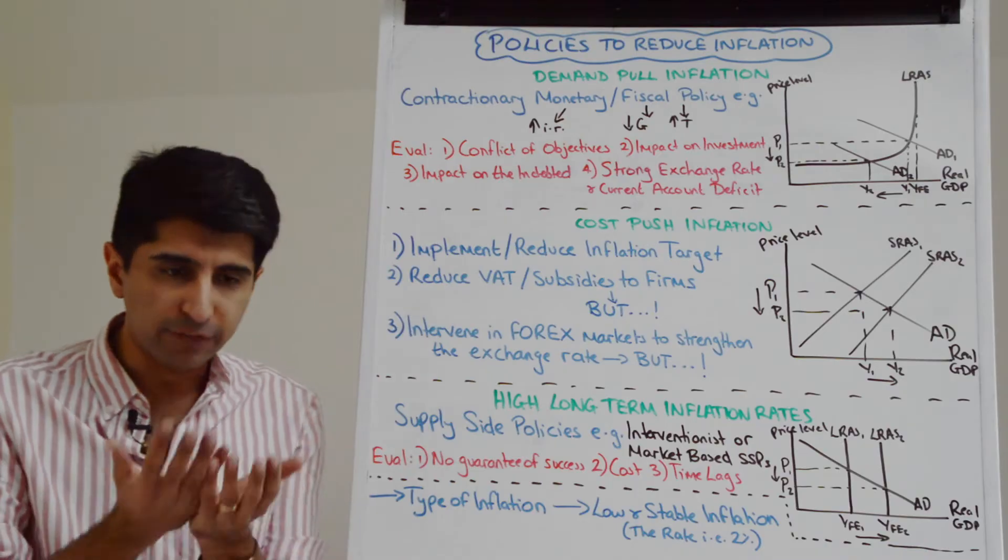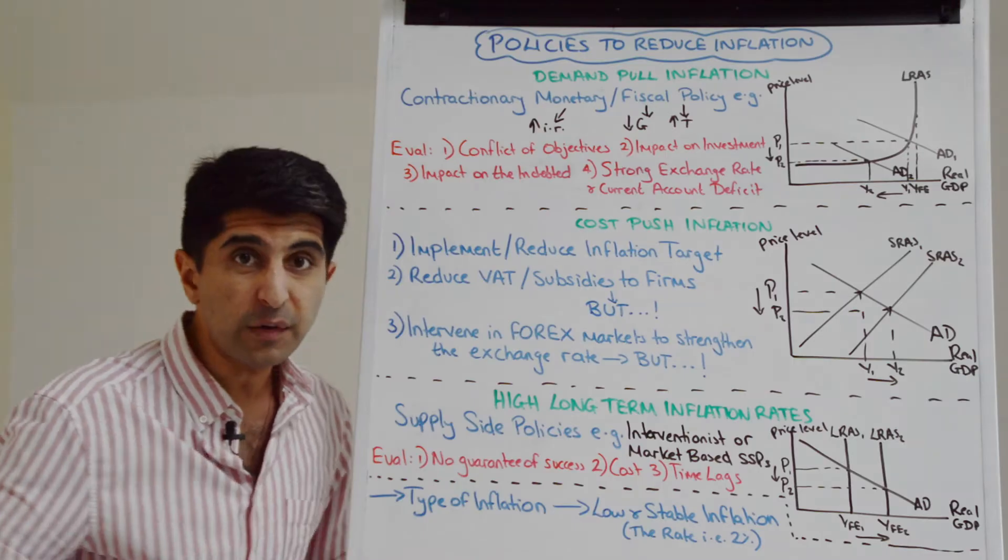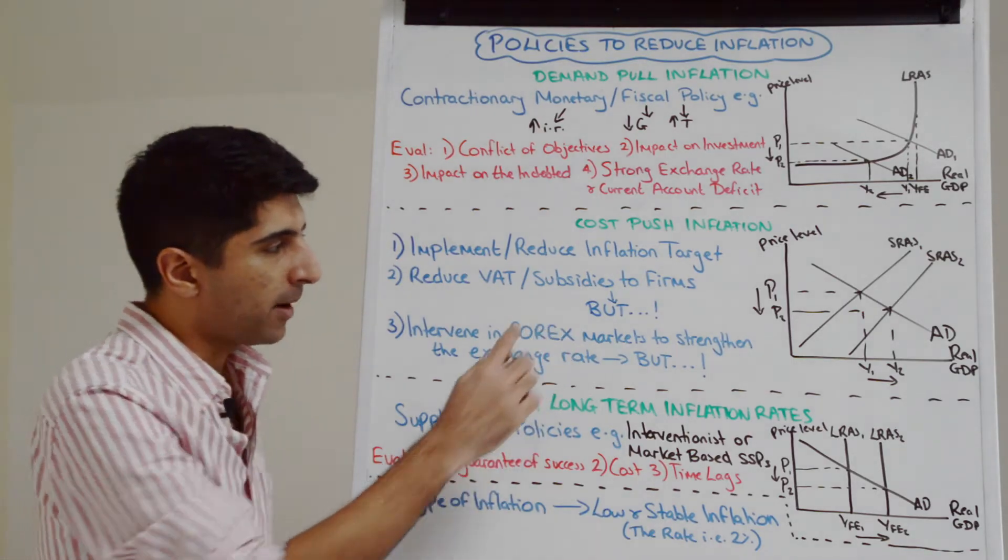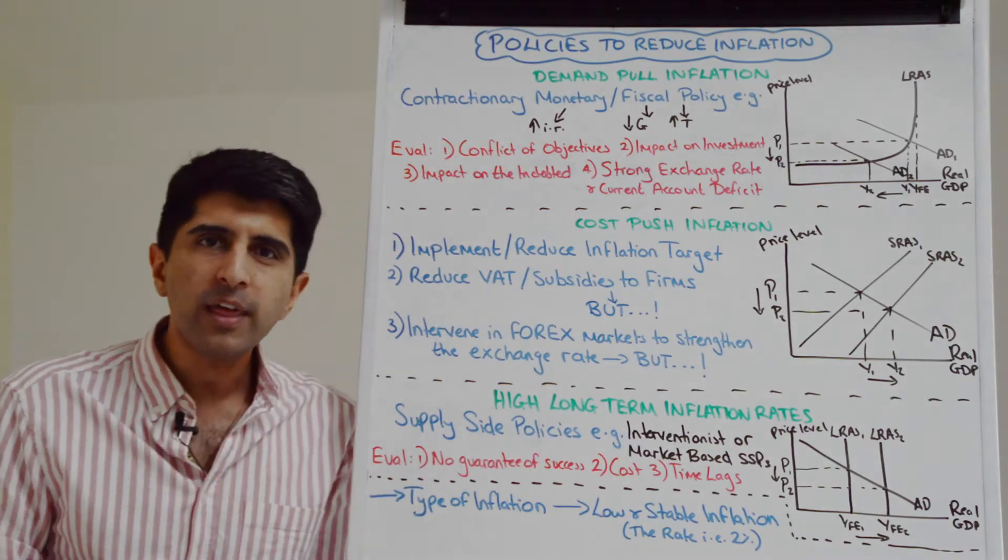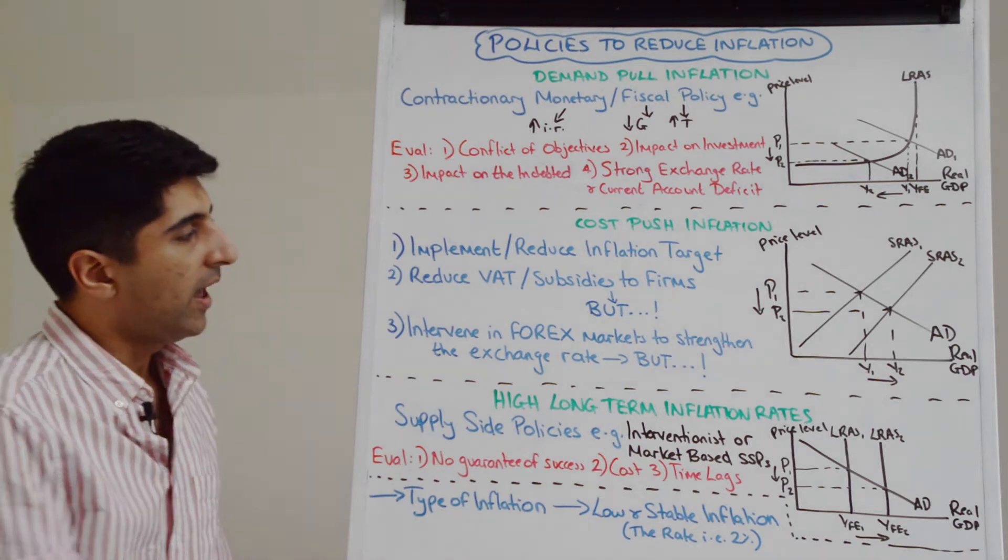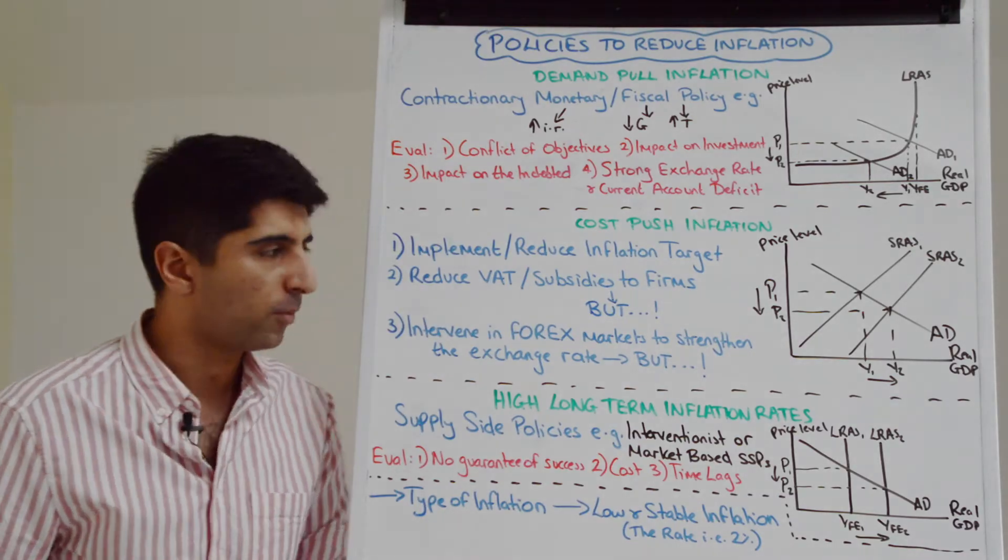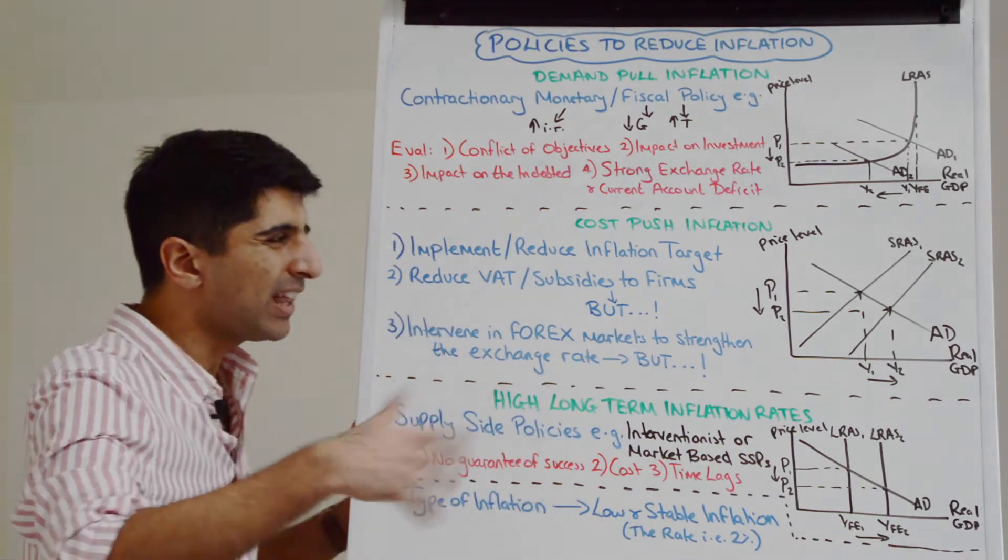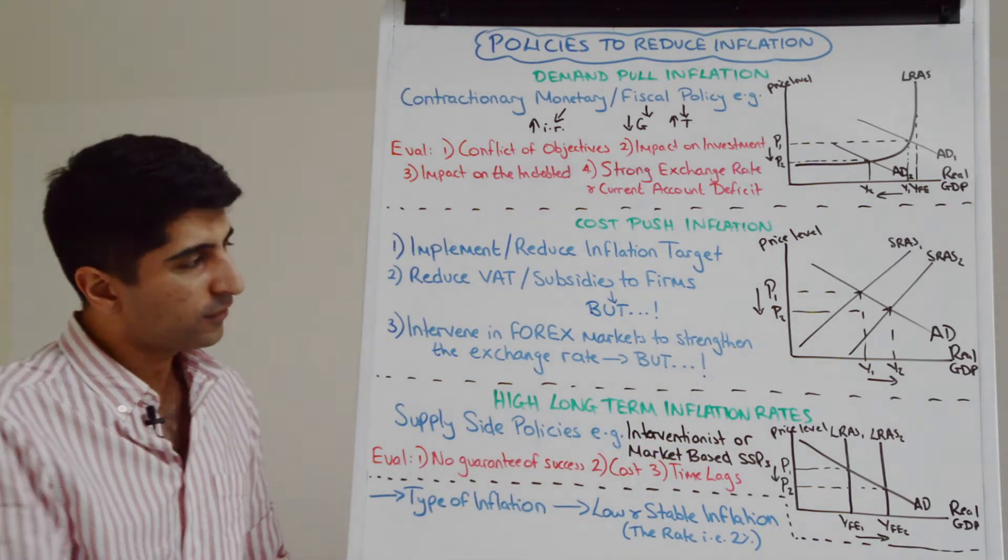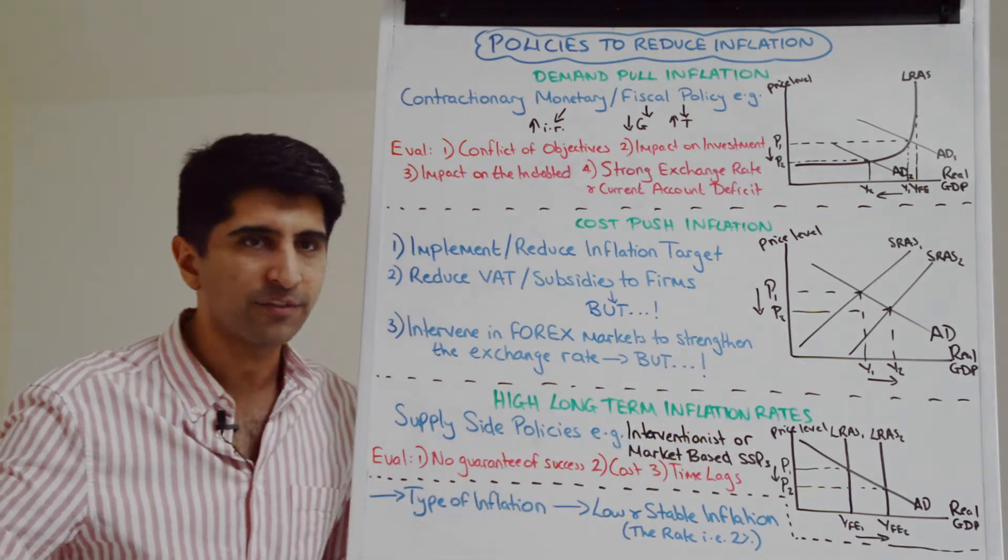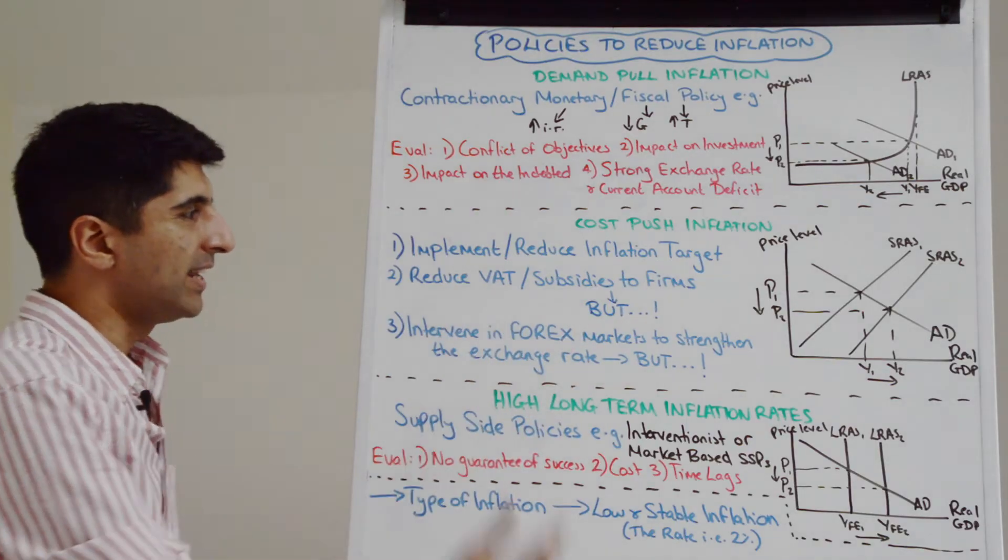What if it's a weak exchange rate that's driving up the price of imported raw materials and leading to higher cost-push inflation? Well, in theory, central banks can intervene in foreign exchange markets, currency markets in order to strengthen the exchange rate. Why would they do that? Well, a stronger exchange rate makes imports cheaper. And if imports are cheaper, that can reduce the price of imported raw materials and reduce cost of production for firms who import raw materials. Okay, fine. Again, in theory, we kind of get the idea. In reality, ludicrous because many countries out there in the world have got freely floating exchange rates. So to talk about intervening in foreign exchange markets is not what would happen in reality. So we can again kind of dismiss that idea as well.